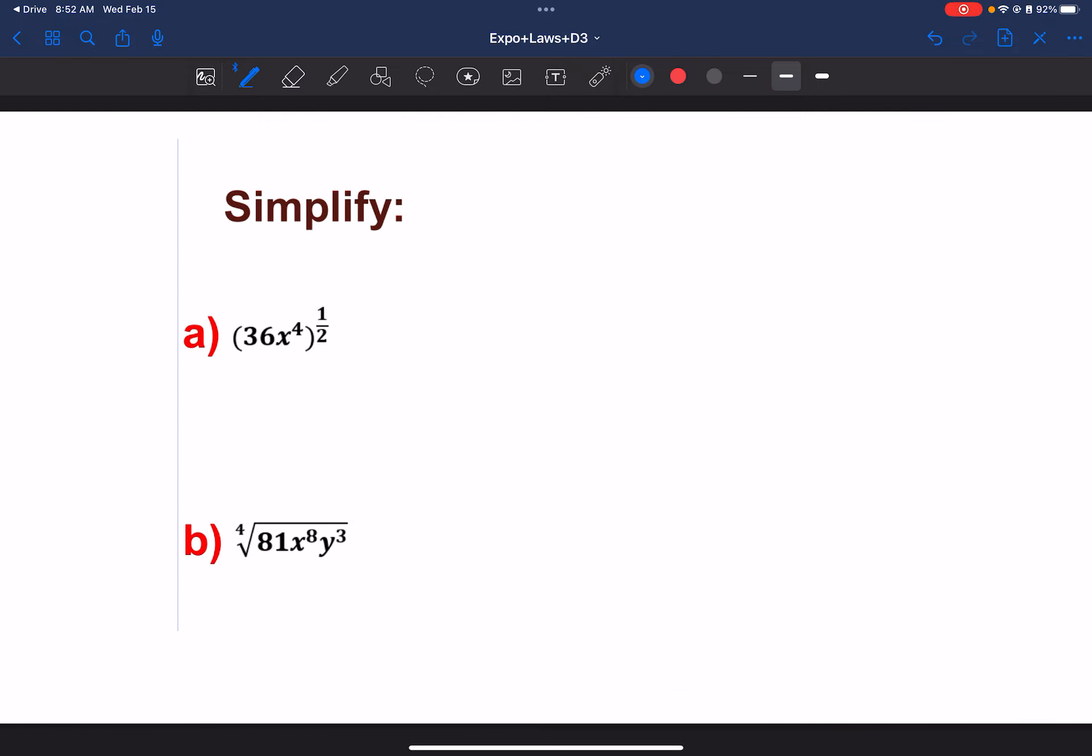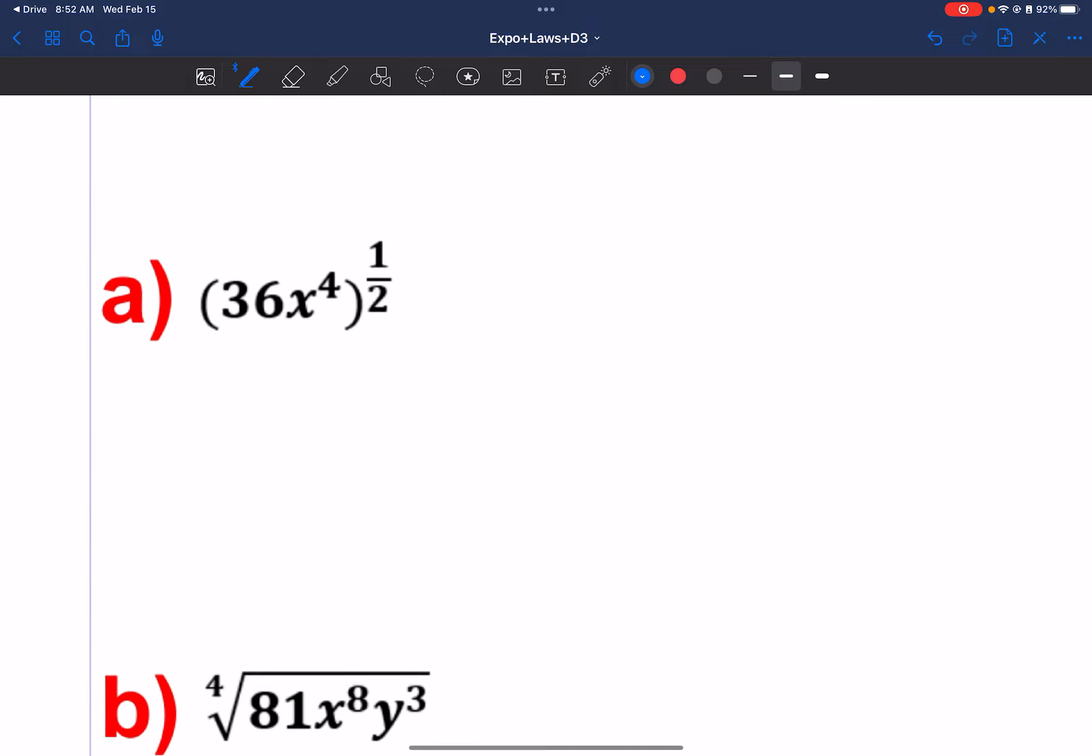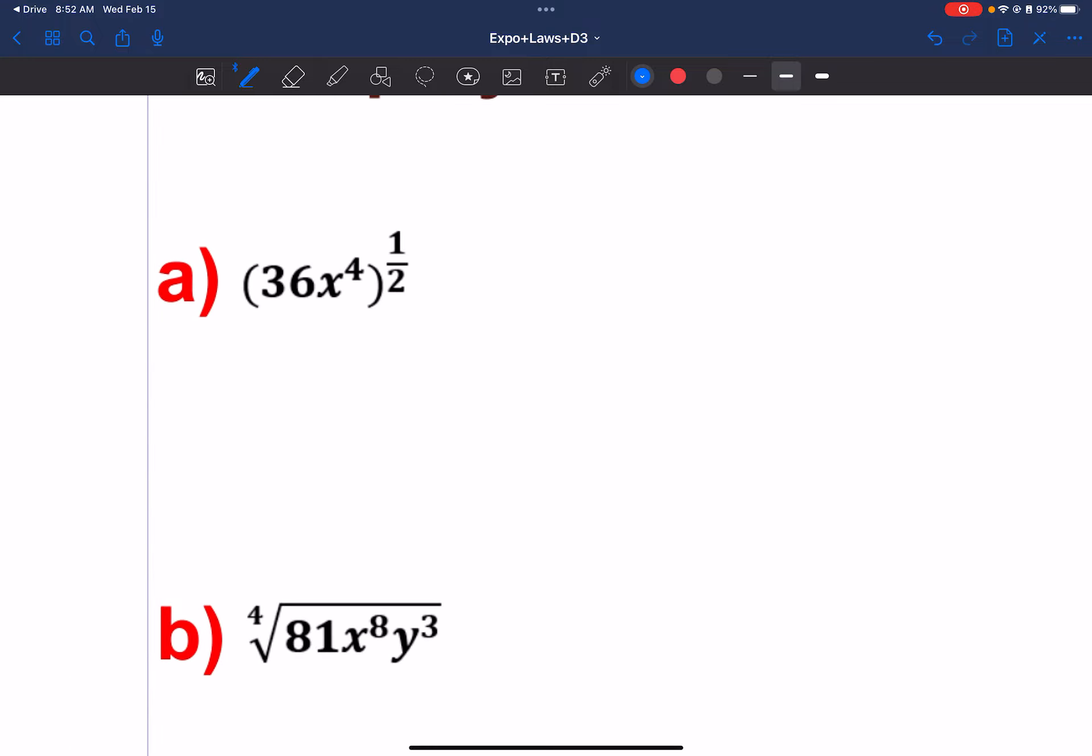All right. Now let's talk about some radicals to exponentials. This is the last little bit. What we can do is power to a power here. So we can have 36 to the 1 half times x to the second because we multiplied 4 times 1 half. Now, 36 to the 1 half, that's really square root of 36. So we really have 6x squared.